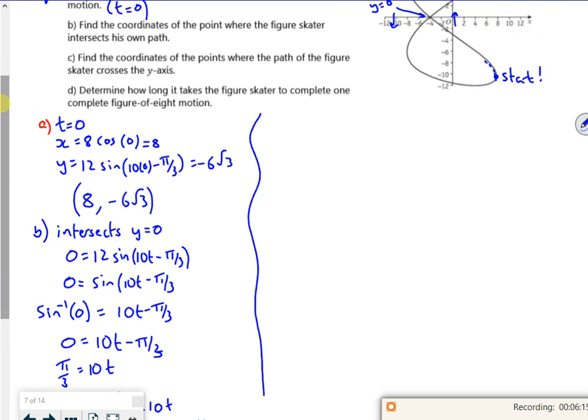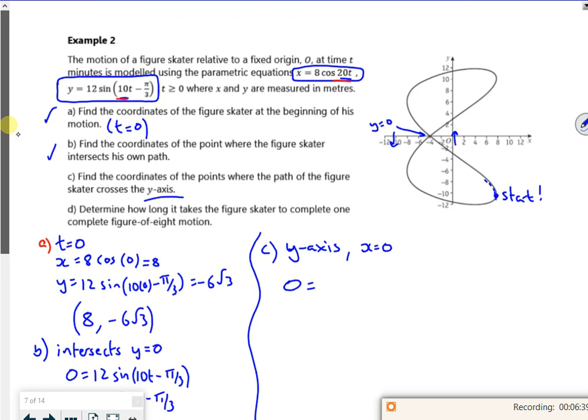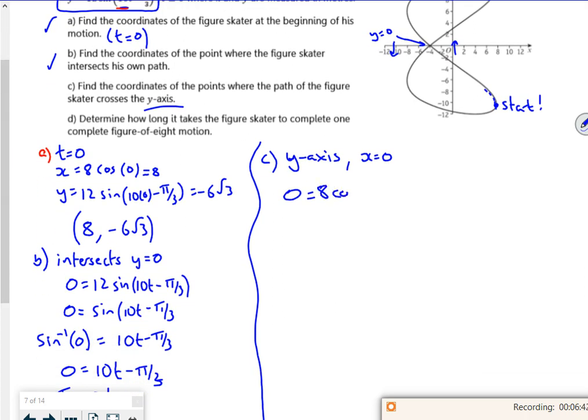So let's have a look at C now. So C says, find the coordinates where the path crosses the y-axis. So if it's the y-axis, I'm looking at x is 0. So we've got 0 is equal to 8 cos 20t. So 0 is cos 20t, cos to the minus 1 of 0 is 20t.